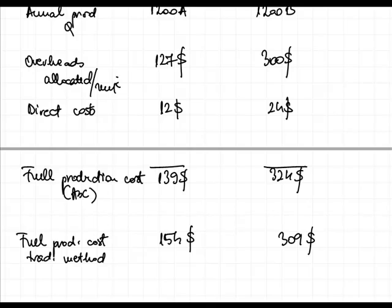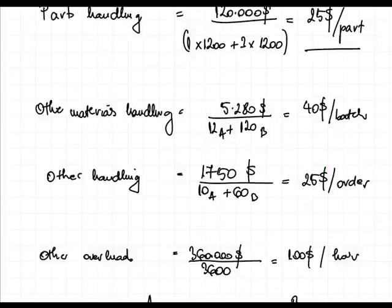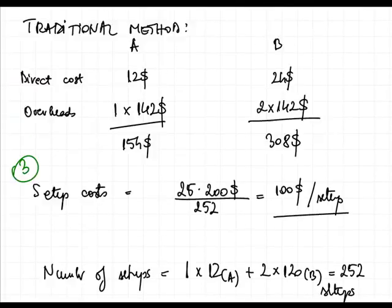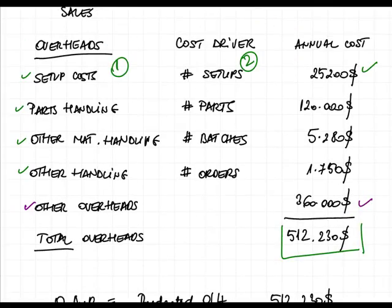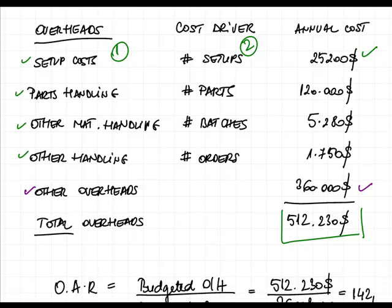However, one of the main disadvantages is the difficulty companies face when trying to identify the activities and cost drivers. In a simple example like this it's fairly easy, but in a real-world scenario, just imagine how many products a company manufactures, how many activities can be identified, and how many cost drivers must be identified for those activities. The cost drivers might also not be identified in a very accurate manner, which can distort the entire cost calculation.